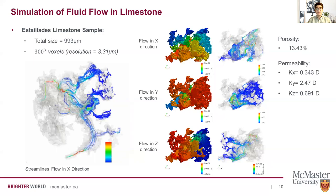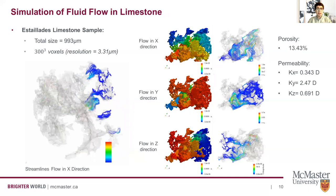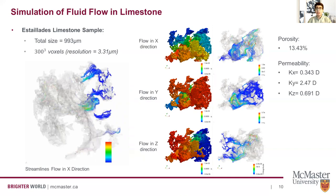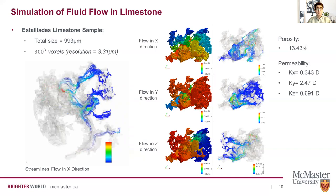Similarly, we simulated the Estaillades limestone sample for permeability calculation. We can note that the high level of heterogeneity of the limestone sample leads to a substantial difference in permeability values in each direction, ranging multiple orders of magnitude. This emphasizes the effect of volumetric spatial features on porous media flow characteristics.